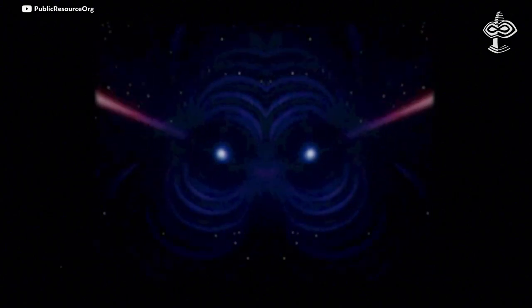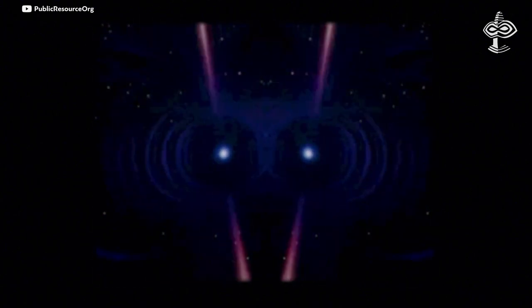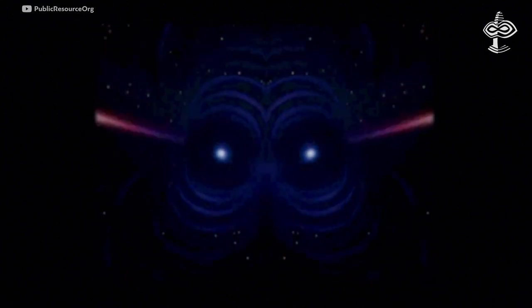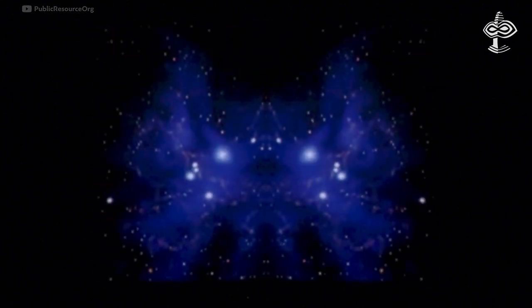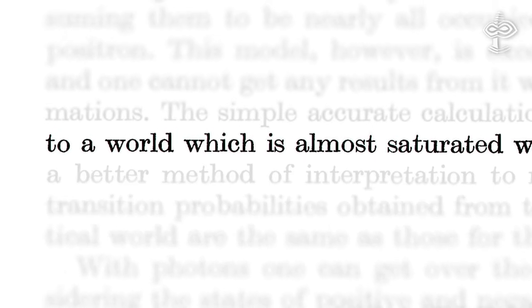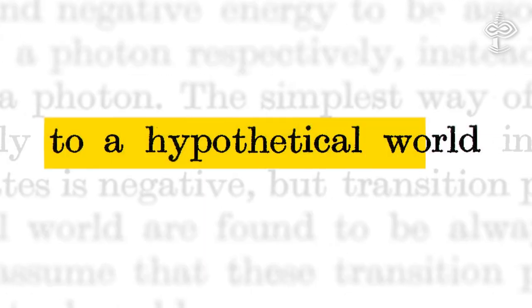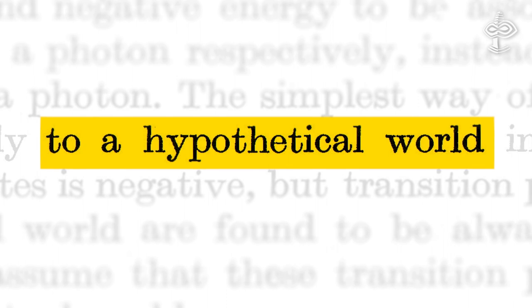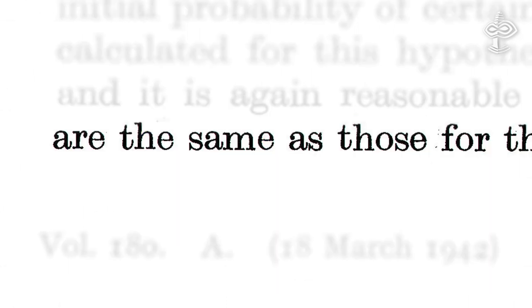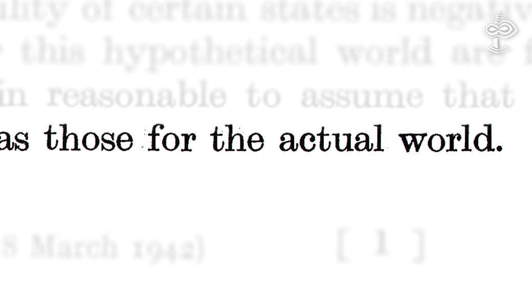In other words, negative probabilities and energies should be considered simply as things that exist somewhere else but do not appear in the experimental results of the actual world. If negative energies and probabilities are not observed in the actual world, then where can they exist? As an answer, Dirac put forward his idea of a so-called hypothetical world that complements ours.